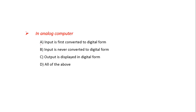In Analog Computer — Option A: Input is first converted to digital form — this is wrong. Option B: Input is never converted to digital form — this is correct. Output is displayed in digital form — this is also wrong. In Analog Computers, all work happens in the form of Analog Signals. So Option B is correct.